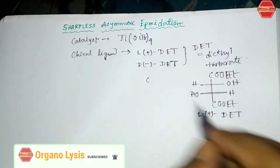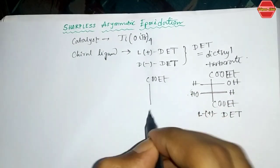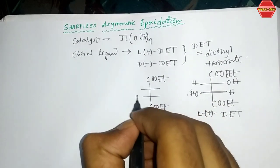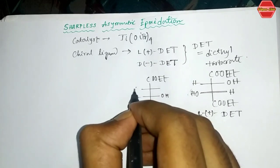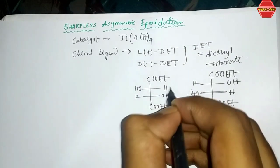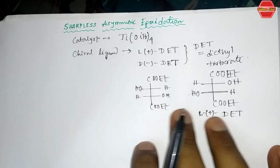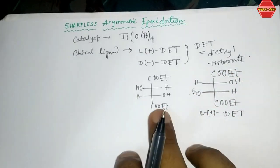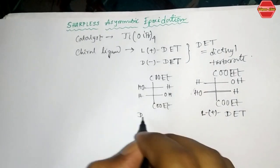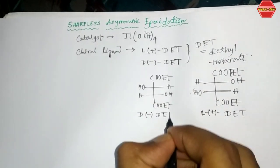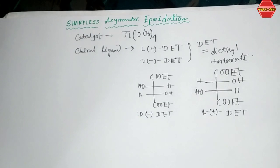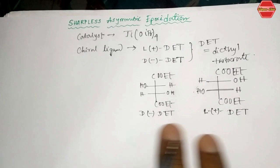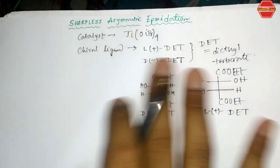In L(+)-DET, the OH groups point to the left, while in D(−)-DET the OH groups point to the right. This gives two optically active forms. The D(−)-DET is diethyl D-minus tartrate. This chiral ligand is very important because it controls the chirality of the entire reaction.